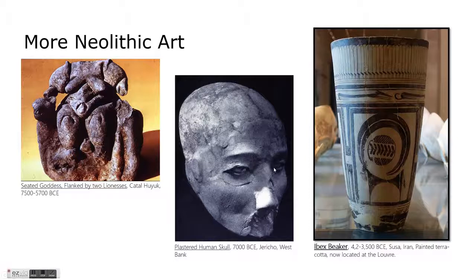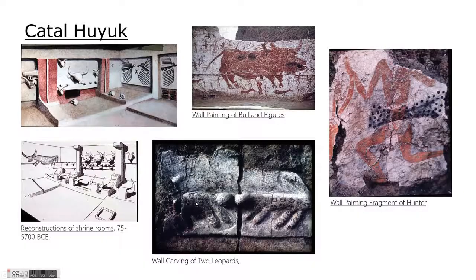Jericho was a little bit later. The main thing to point out about Jericho is that we see a different kind of art there. One of the unusual things we find is the use of human skulls — apparently for some kind of ancestor worship, where they're taking the skulls of deceased ancestors and re-plastering them to recreate the appearance of the ancestor.